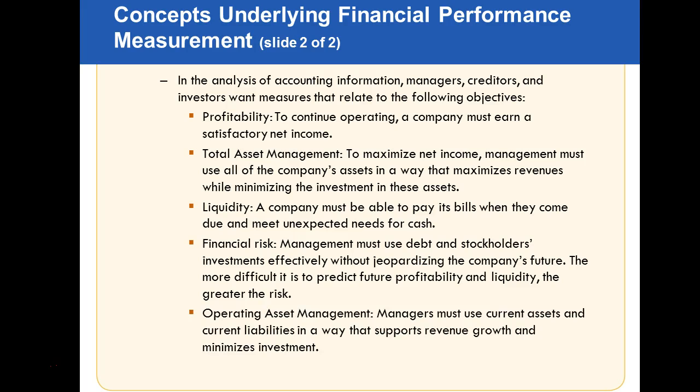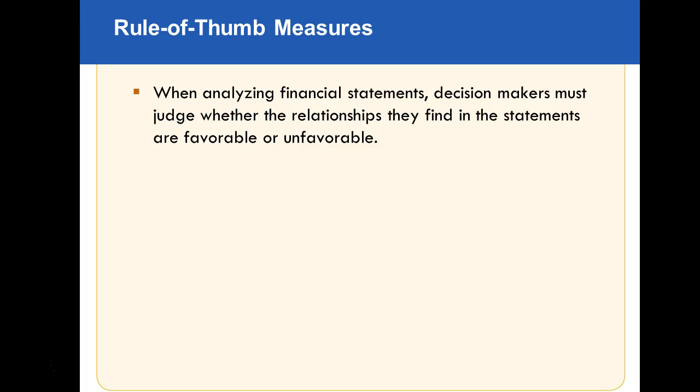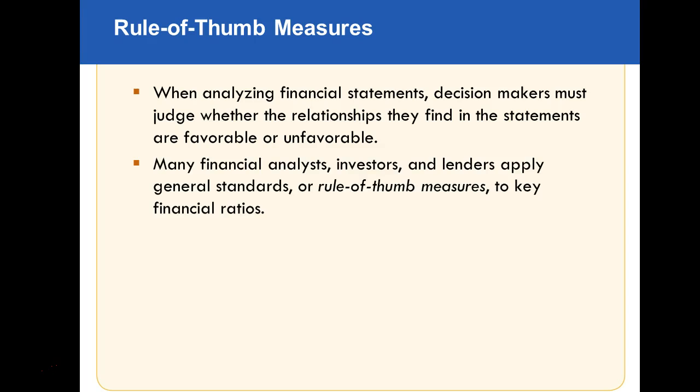Operating asset management means managers use current assets and current liabilities in a way that supports growing revenues and minimizes investment. Are they utilizing their resources in the best way, or letting idle cash just sit? When looking at financial statements, decision makers must see whether the relationships they find are positive or negative. Many financial analysts, investors, and lenders apply general standards to measure key financial ratios.